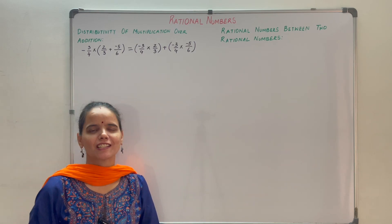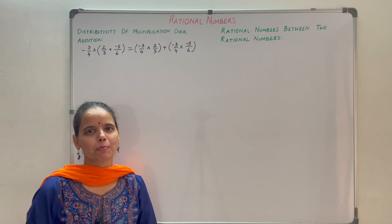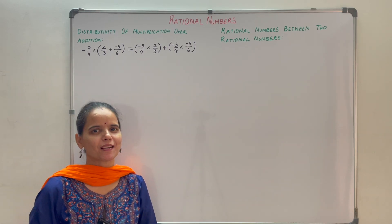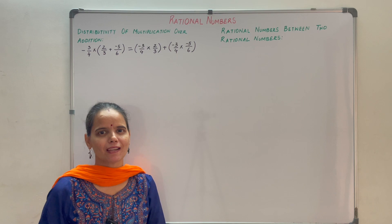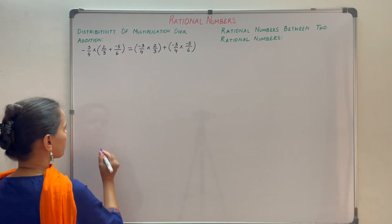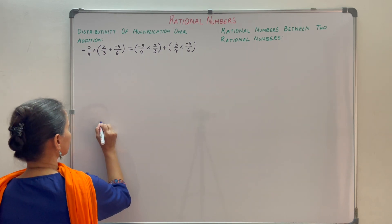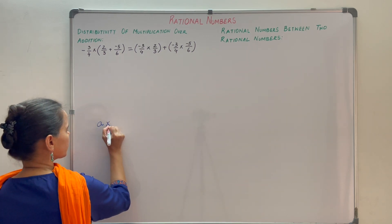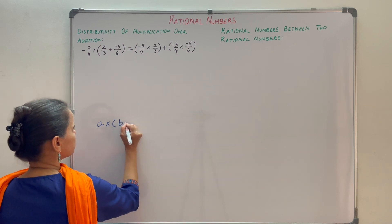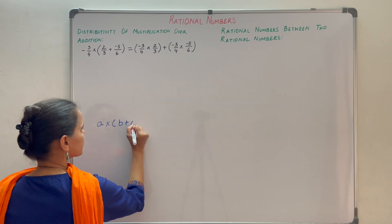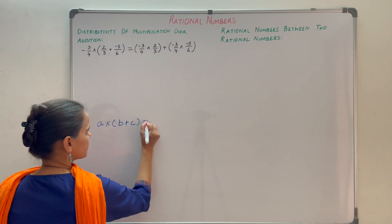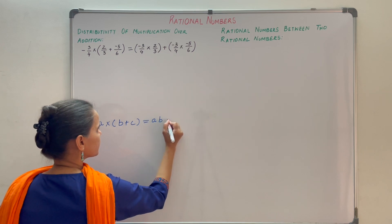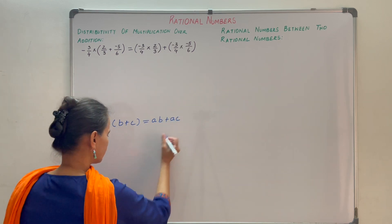Now we will discuss distributive property. Suppose you have three rational numbers a, b and c. Distributive property of multiplication over addition means a into (b plus c) is equal to a·b plus a·c.